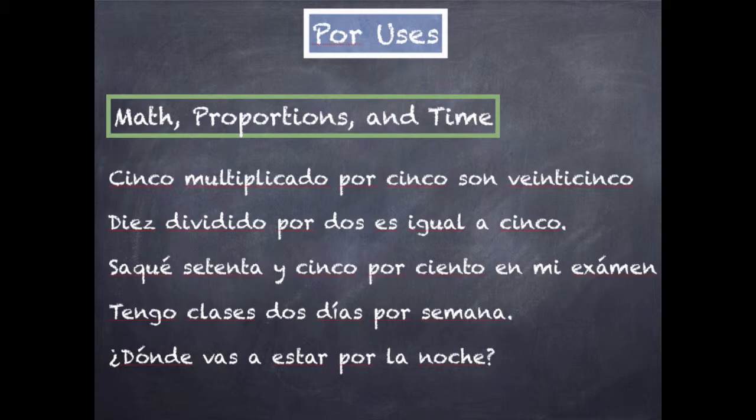If I got eight out of ten, I could say saqué ocho por diez — same idea. Tengo clases dos días por semana — this expresses the denominator, so out of one week, I have two days of classes. ¿Dónde vas a estar por la noche? — Where are you going to be during the night?